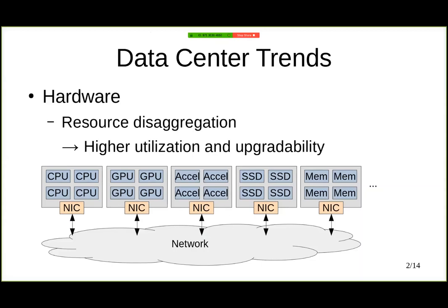Many of you probably already know, it's a relatively recent hardware trend in designing data centers, where the target objective is to reduce costs by increasing utilization and upgradability of hardware by taking each of the resources that we would typically have on a data center — like CPUs, accelerators, SSD storage, or memory — and putting each of these types of resources on separate nodes and interconnecting them through the network.